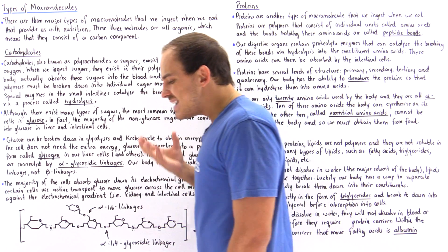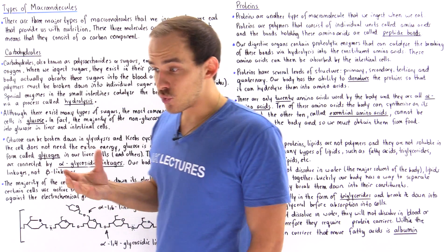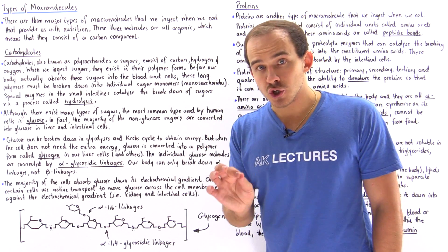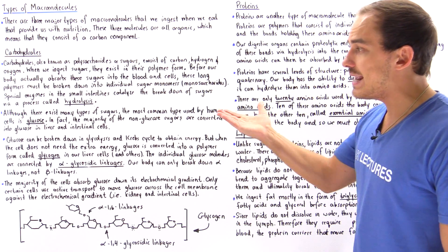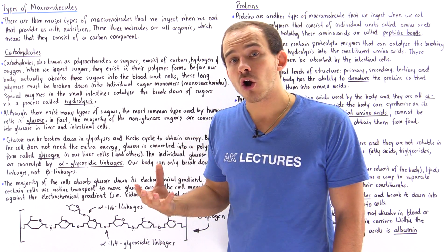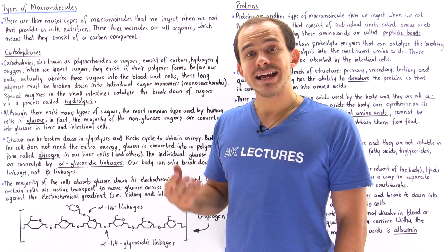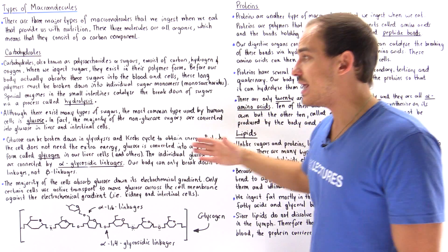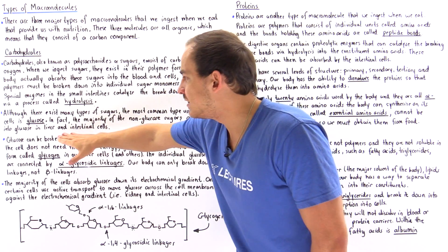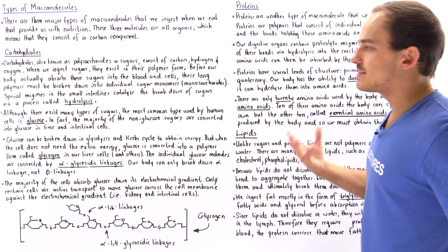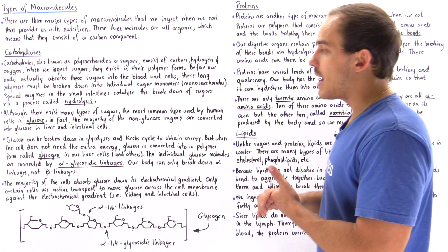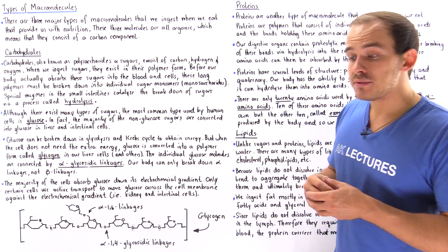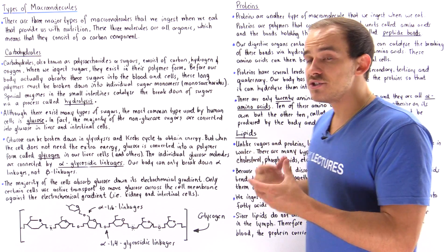Although there are many different types of sugars in nature — five-membered sugars, six-membered sugars, and so forth — the most common monomer of sugar used by the body is glucose. When the majority of cells take in a non-glucose molecule, they normally convert that non-glucose into glucose, and this takes place in liver cells as well as intestinal cells. Glucose can then be broken down and transformed into ATP molecules, which are used for energy.